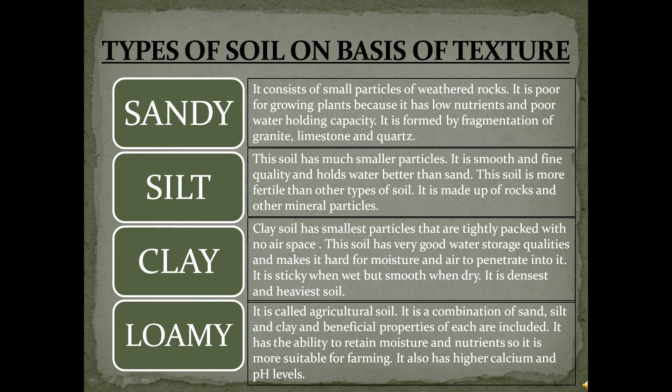There are four types of soil based on texture: sandy, silt, clay, and loamy soil. Sandy soil consists of small particles of weathered rocks. It is poor for growing plants because it has low nutrients and poor water-holding capacity. It is formed by fragmentation of granite, limestone, and quartz.